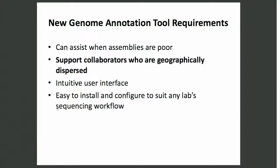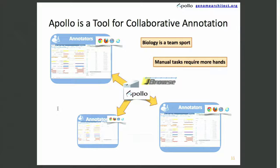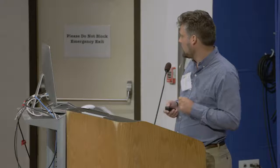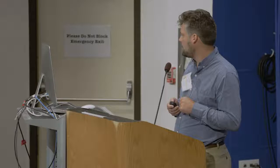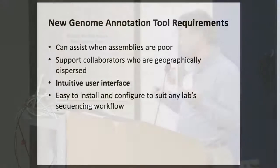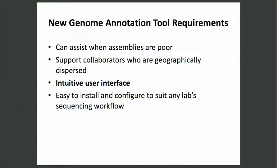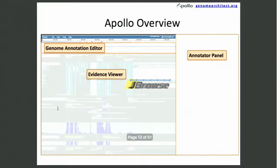The second important piece is the ability to support collaborators who are geographically dispersed. Biology, more and more, as shown with Galaxy and other tools, is a team sport. It's very rarely a single individual doing a single set of annotations. The manual annotation is an intensive task because it's a manual task, and so being able to integrate many users geographically is an important piece of that puzzle. Because it's a manual process, providing an intuitive interface is also important.